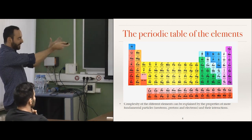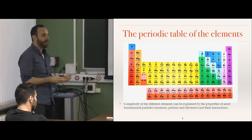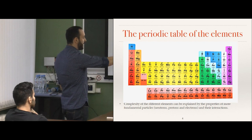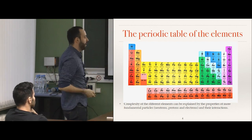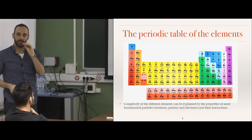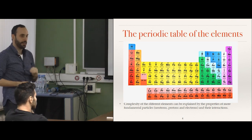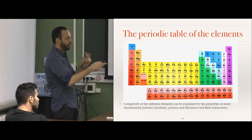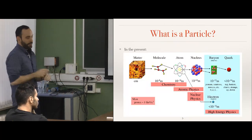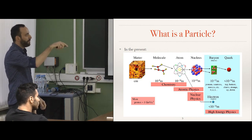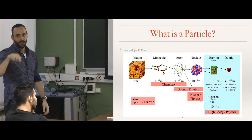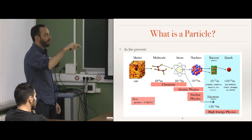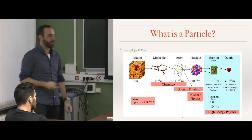So in the 1800s these elements were the particles — but from my point of view there are so many of them. Why so many? It's easy to build complexity from a complex starting point. What Mendeleev saw was that this rich table could be explained by the properties of more fundamental things common to all elements. We now know those are neutrons, protons, and electrons, and also the interactions among them.